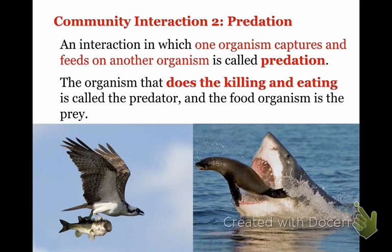The second type of interaction is predation. An interaction in which one organism captures and feeds on another organism is called predation. The organism that does the killing and the eating is the predator, and the organism that gets eaten is called the prey.